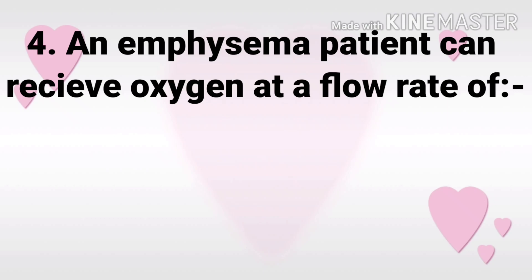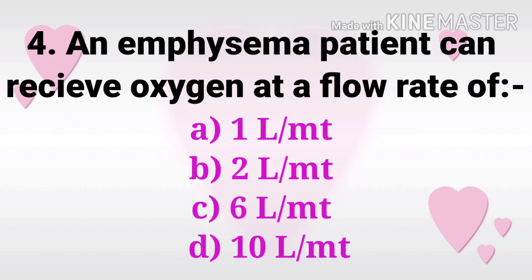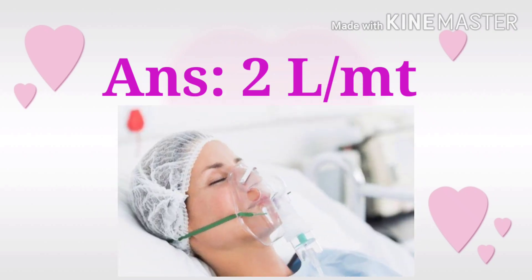Question 4: An emphysema patient can receive oxygen at a flow rate of? The options are 1 liter per minute, 2 liters per minute, 6 liters per minute, and 10 liters per minute. The answer is 2 liters per minute.